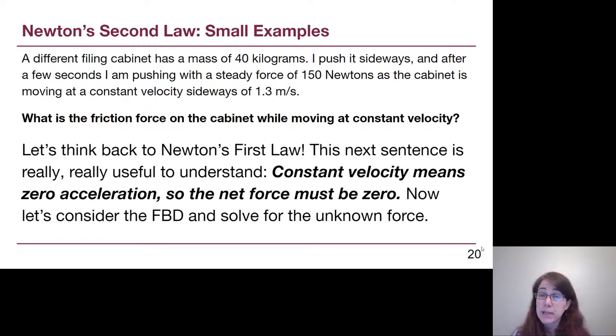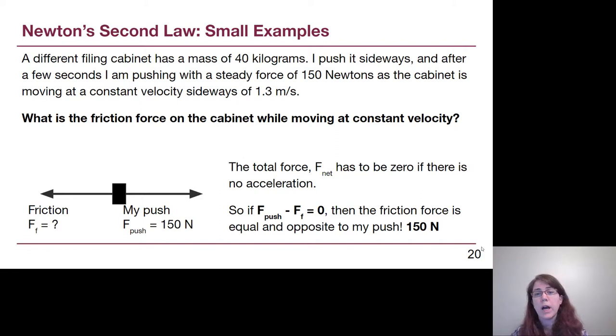All right. There's a big note here at the bottom. Let's think back to Newton's first law. This next sentence that I've got bolded on the slide is really important for us to understand and maybe even put in all caps highlighted into our notebooks. Constant velocity, we have to train our brain that that means zero acceleration. It's not changing, and so the acceleration is zero while it is moving. Now, with Newton's first law, if the acceleration is zero, then the net force has to be zero also. So if we look at our free body diagram, I'm pushing in one direction. Friction is pushing against my attempts in the other direction. The total force has to be zero if we aren't accelerating. So if the total force is zero, then friction has matched what I'm pushing with, and it's equal and opposite 150 newtons pointing against the motion.